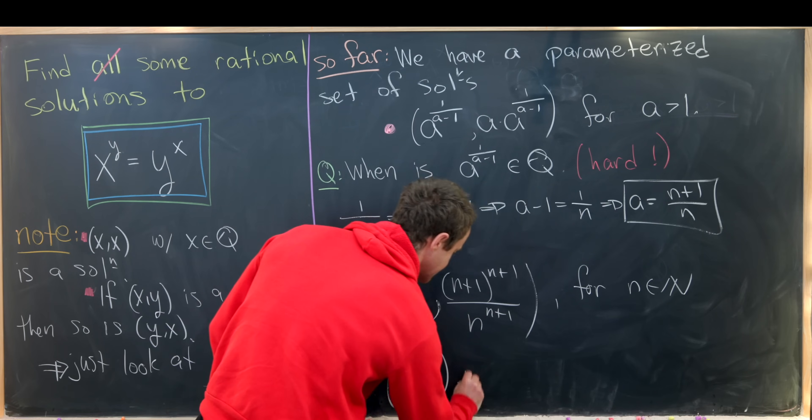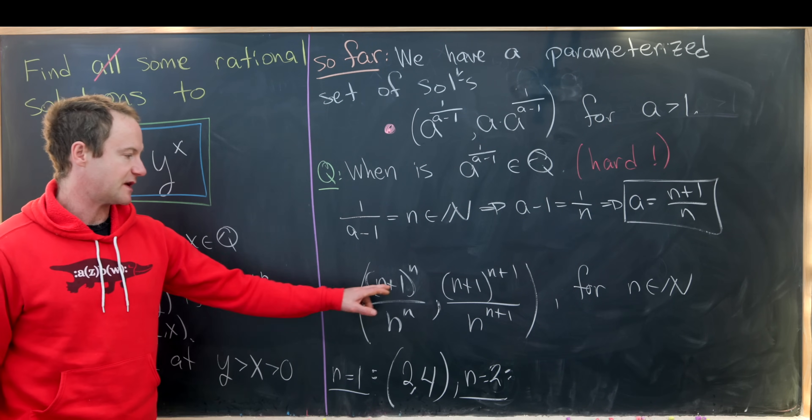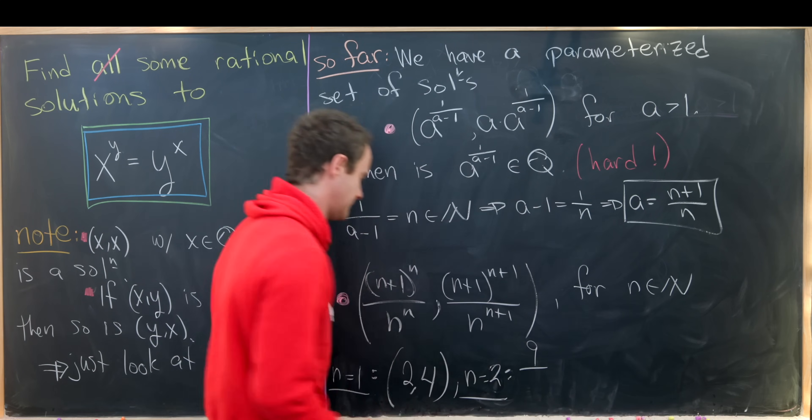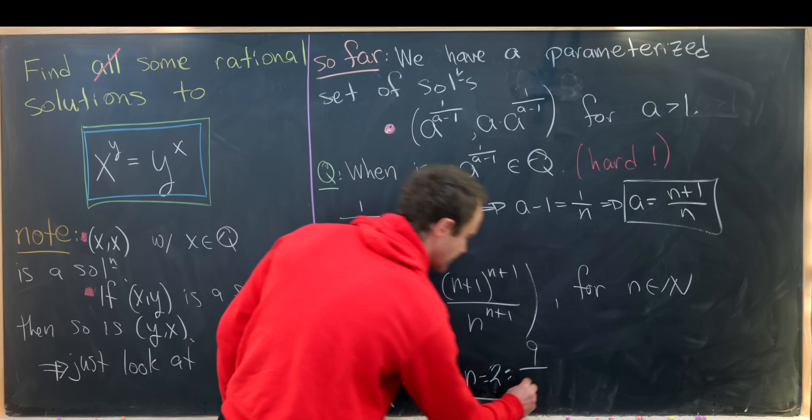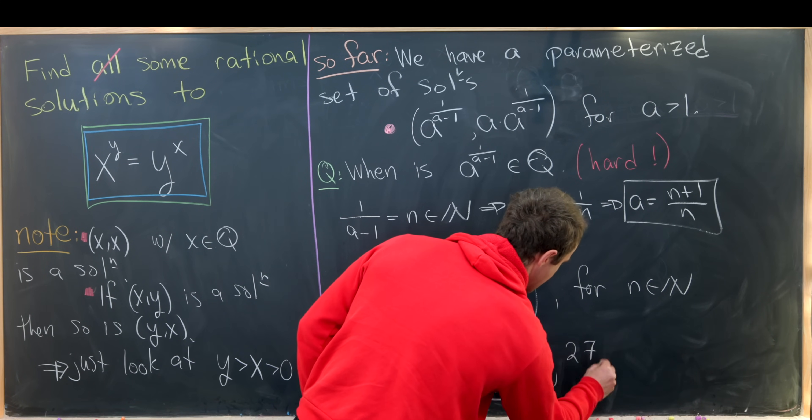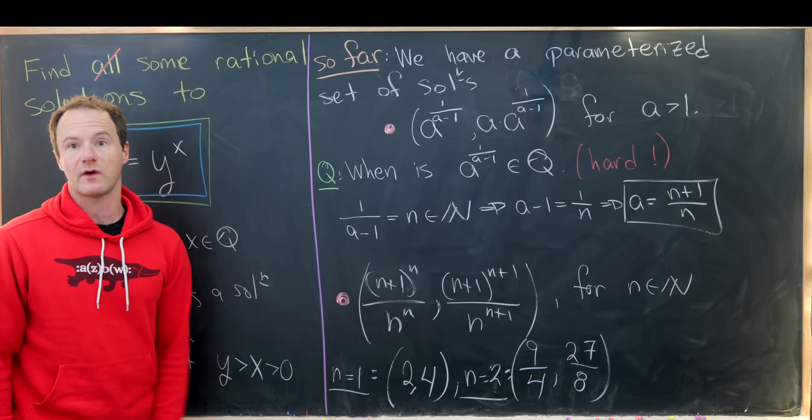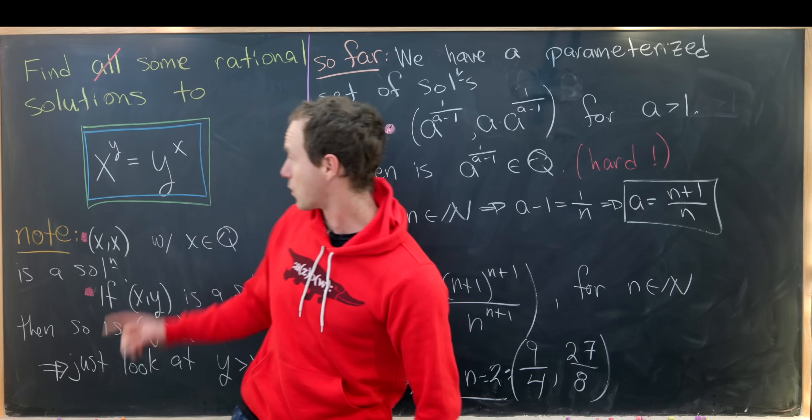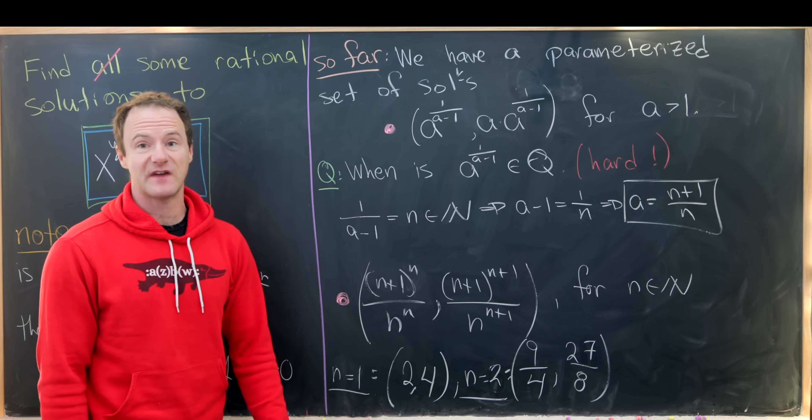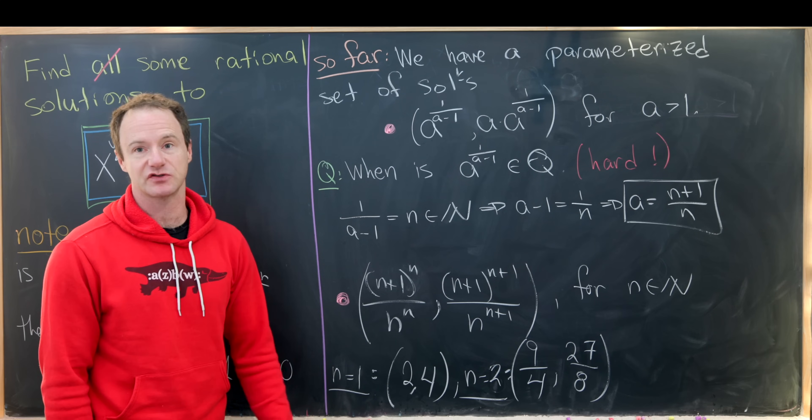Now let's look at the next one, maybe n equals two and see what we get. So that'll be three squared. So that'll be nine over two squared. That'll be four. And then this will be 27 over eight for the next one. So that's another rational solution. And you can check that that works as well just by plugging it in. Then we can get an infinite family of rational solutions just like this based off of these natural numbers.